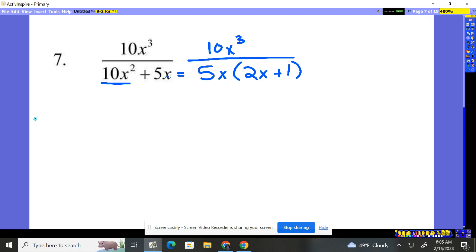The 10 and the 5, now look, 2x plus 1 is its own piece here. You're not going to mess with that unless up top you have a 2x plus 1. So he's his own piece. Nothing's happening there. It's being multiplied by 5x.